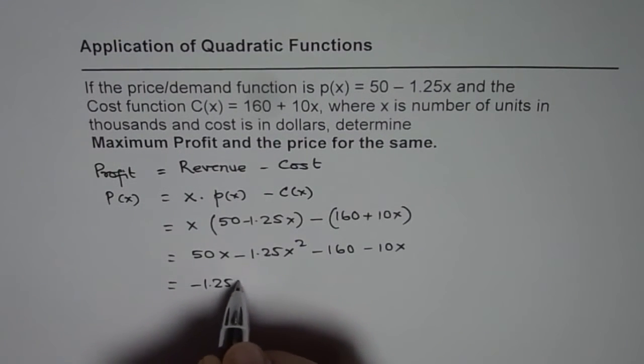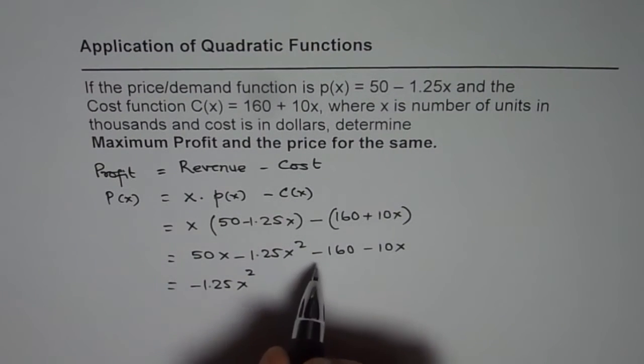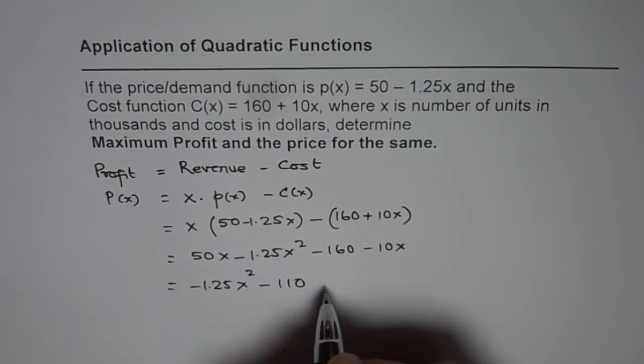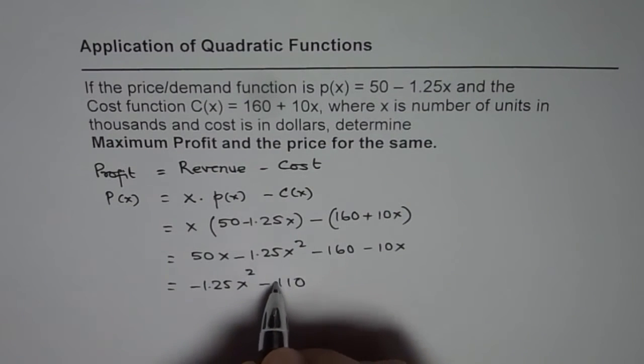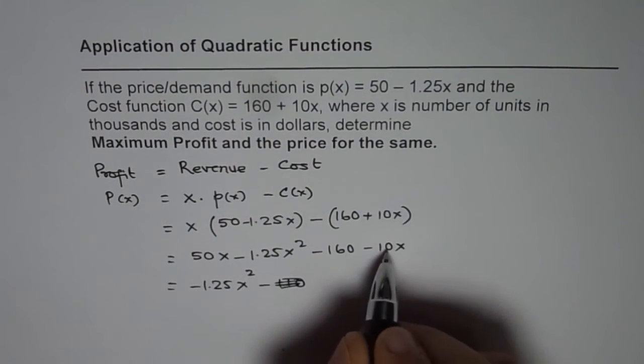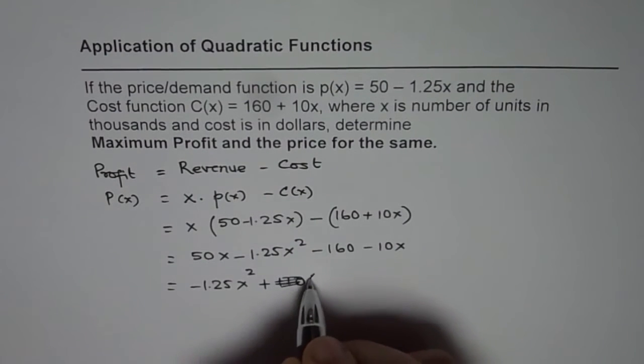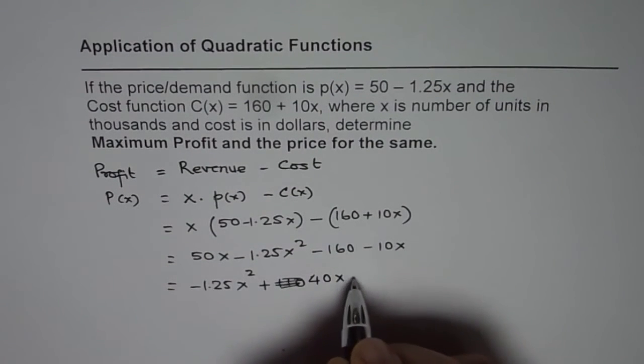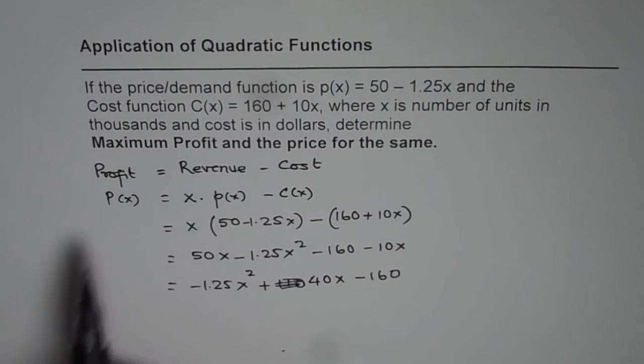Let's combine the like terms. We get minus 1.25x squared. It's always good to write highest degree term first. 50 and minus 10, that means 40. So that becomes the quadratic function which represents the profit function.